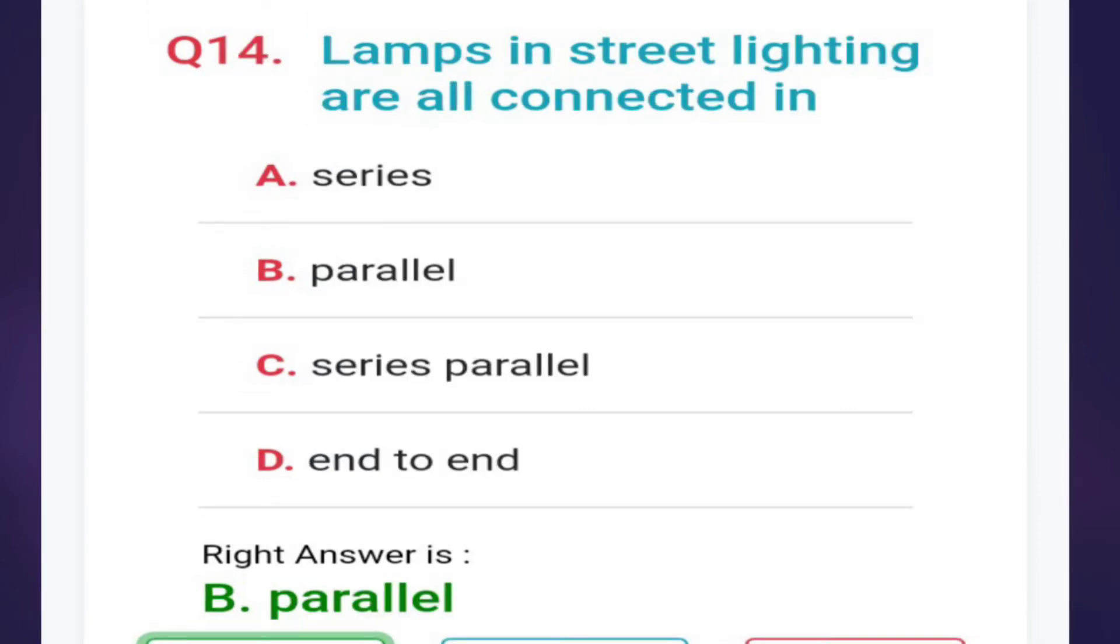Fourteenth: lamps in street lighting are all connected in series, parallel, series parallel, or end-to-end. Correct answer is option B, parallel. Lamps in street lighting are all connected in parallel.